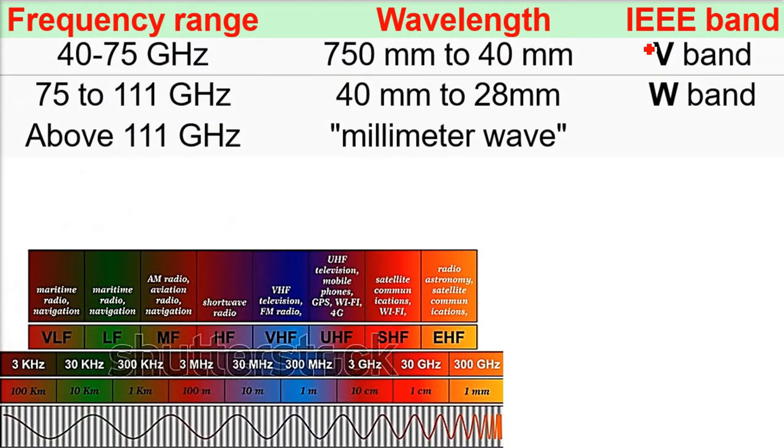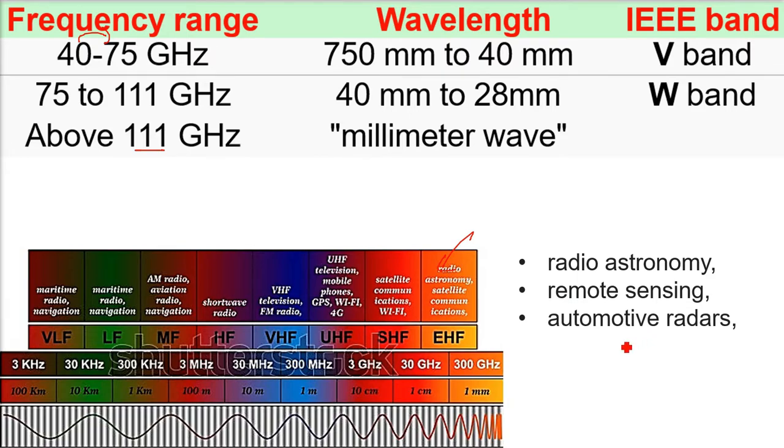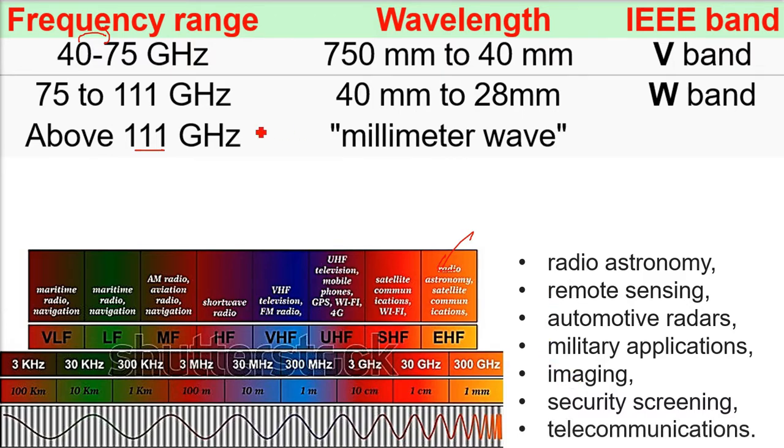Then we have V and W. These are the ranges because we are going to the millimeter wave now. 40 to 75, this is V band. 75 to 111, it's W band. And we have above 111 gigahertz, it's millimeter wave. They are used for radio astronomy, remote sensing, automotive radar, military applications, imaging, security, screening, and telecommunication.